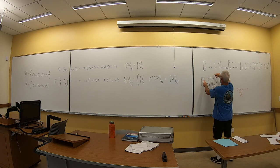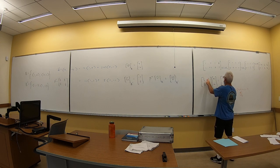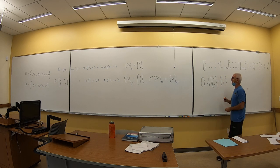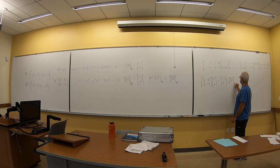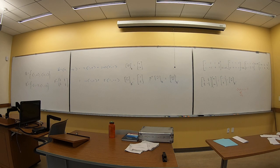Let's verify this works. Multiplying P inverse by [4, -6]: four-halves minus six-halves is -2/2 = -1; four-halves plus six-halves is 10/2 = 5. So we get [-1, 5], which is exactly what it was supposed to be. You could have figured this out without matrix multiplication, but that's not really the point.